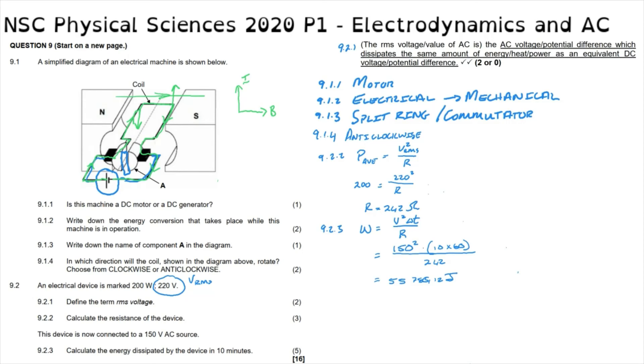A question like this is marked according to the marking guidelines. 9.1.1 is very simply one mark for identifying it correctly as a motor. We know that in a motor electrical energy is converted to mechanical energy, which was for two marks there. What is interesting to see is that there is positive marking from the above question. So if you had made a mistake and called this a generator, you could have still been awarded the two marks if you correctly identified the energy conversion in a generator as being electrical to mechanical. Question 9.1.3 asks for the name of the component, and that is either a split ring or a commutator for one mark. 9.1.4, we were given two marks for using the left-hand motor rule correctly to identify the direction as anti-clockwise.